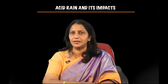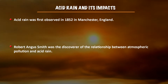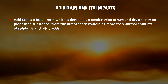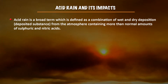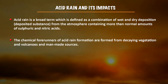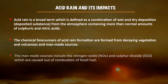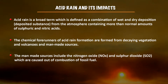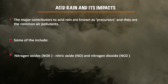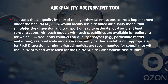The third impact of air pollutants is acid rain. Acid rain was first observed in 1852 in England, where the relationship between atmospheric pollution and acid rain was discovered. Broadly, acid rain is a combination of wet and dry deposition from the atmosphere containing more than normal amounts of sulfuric and nitric acid. The chemicals that are precursors of acid rain are formed from decaying vegetation, volcanoes, and man-made sources such as nitrogen oxides and sulfur dioxide from combustion of fossil fuels.